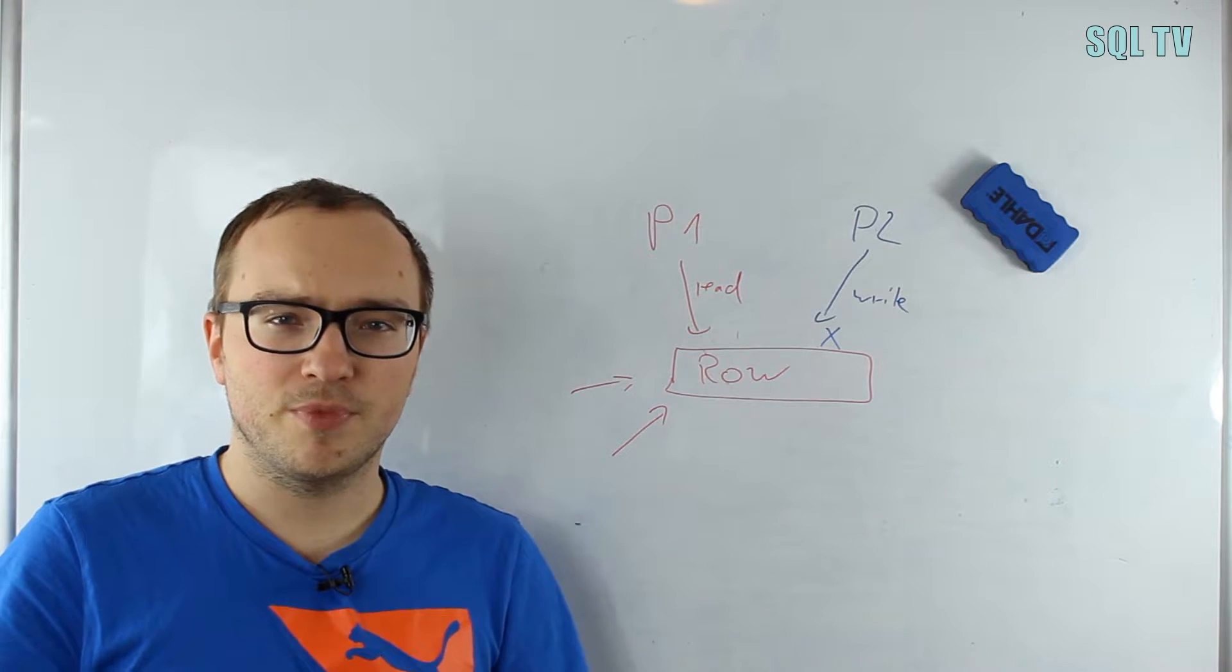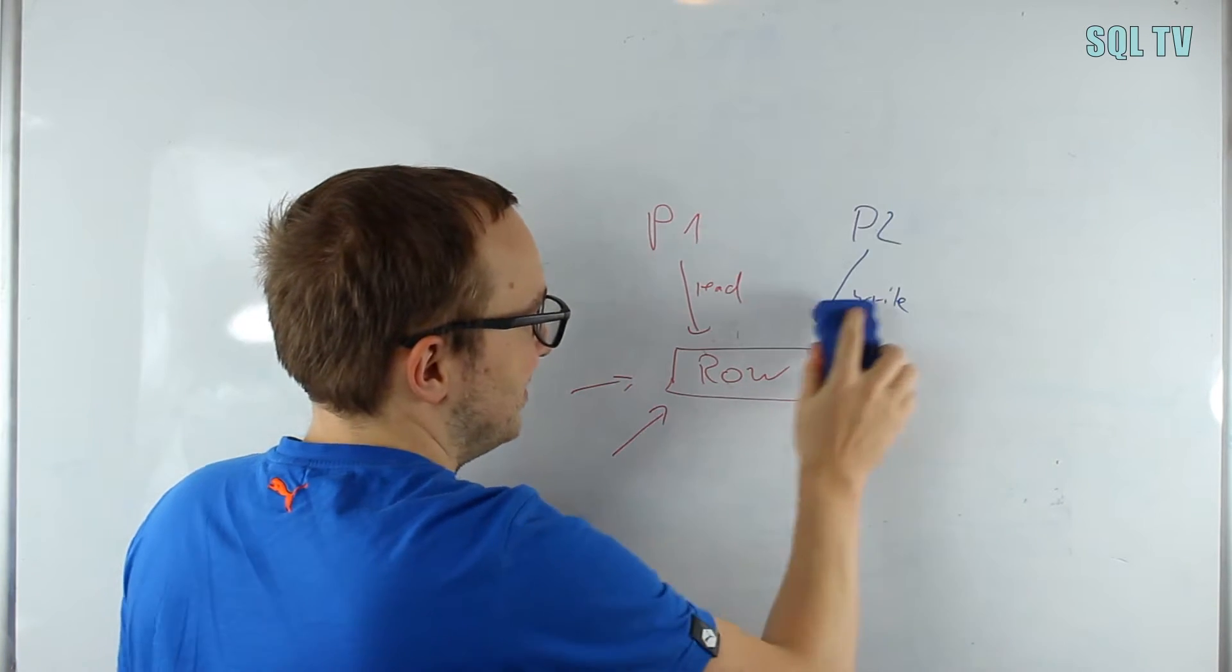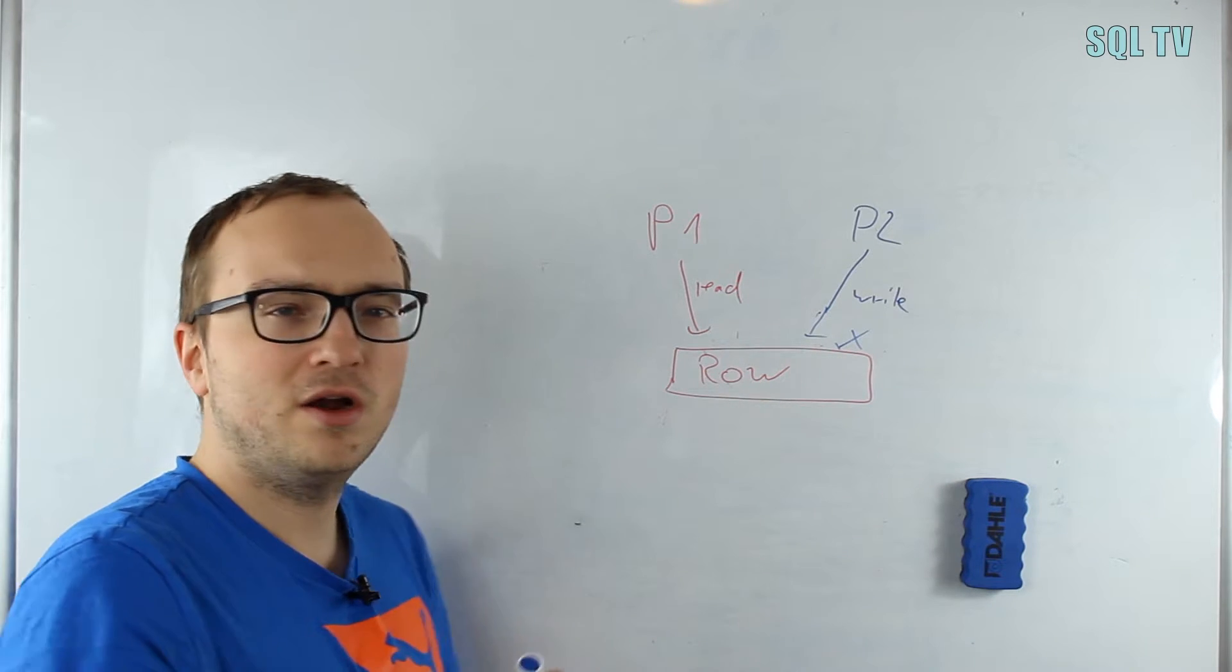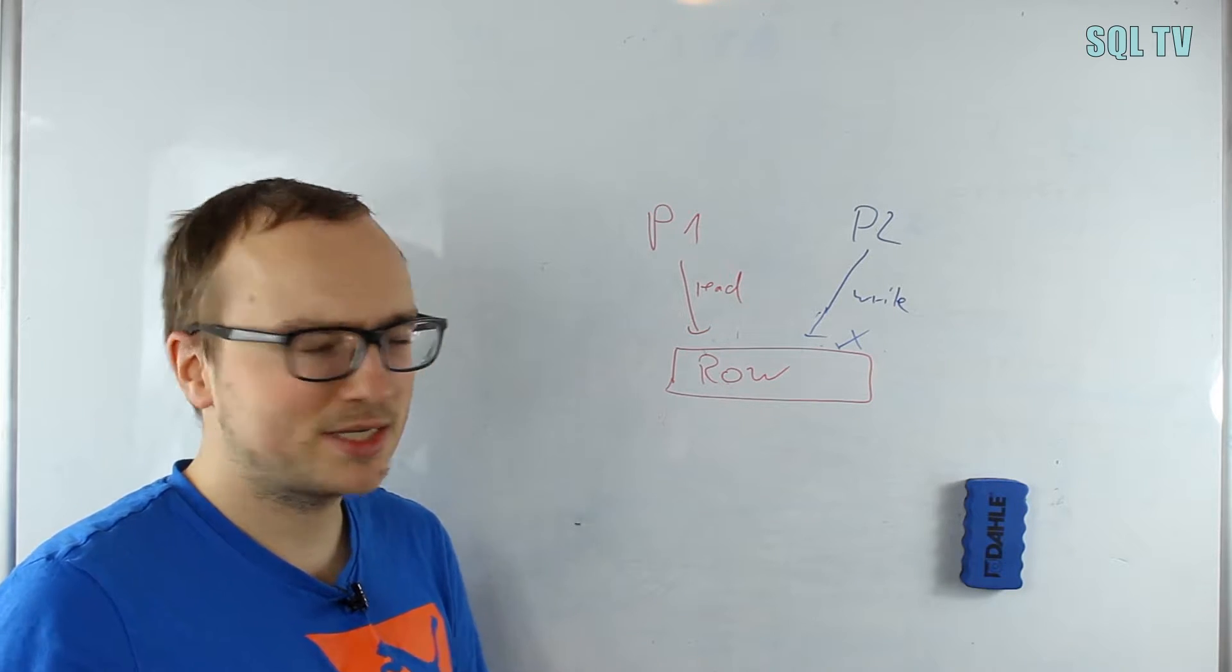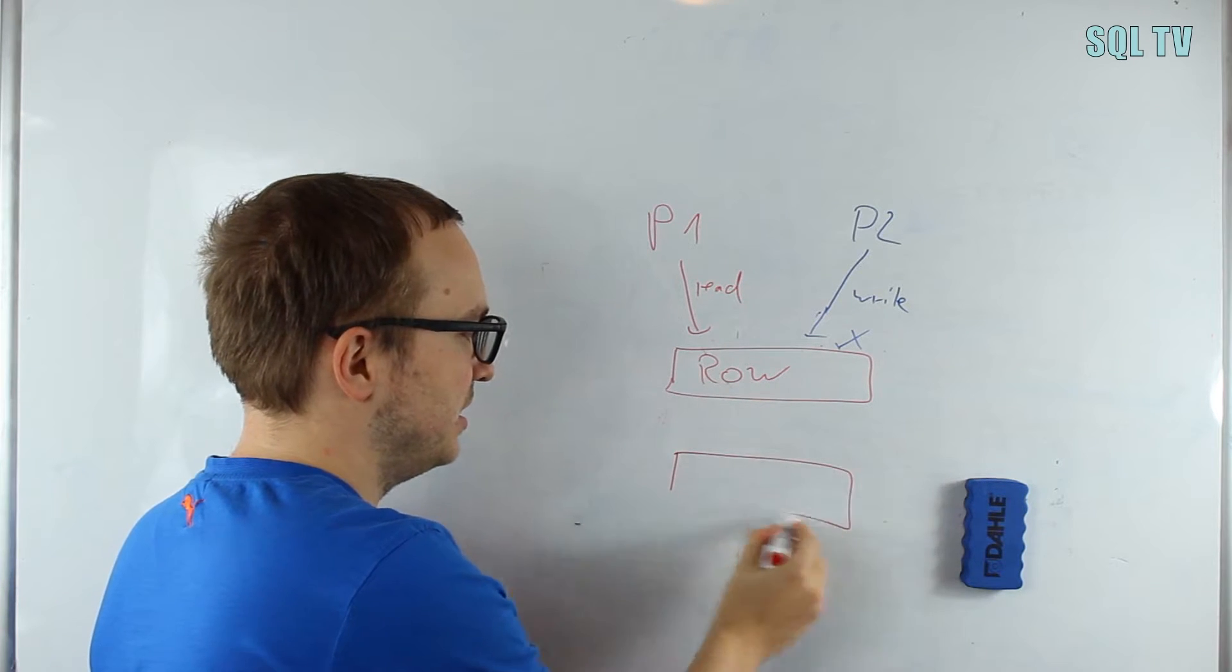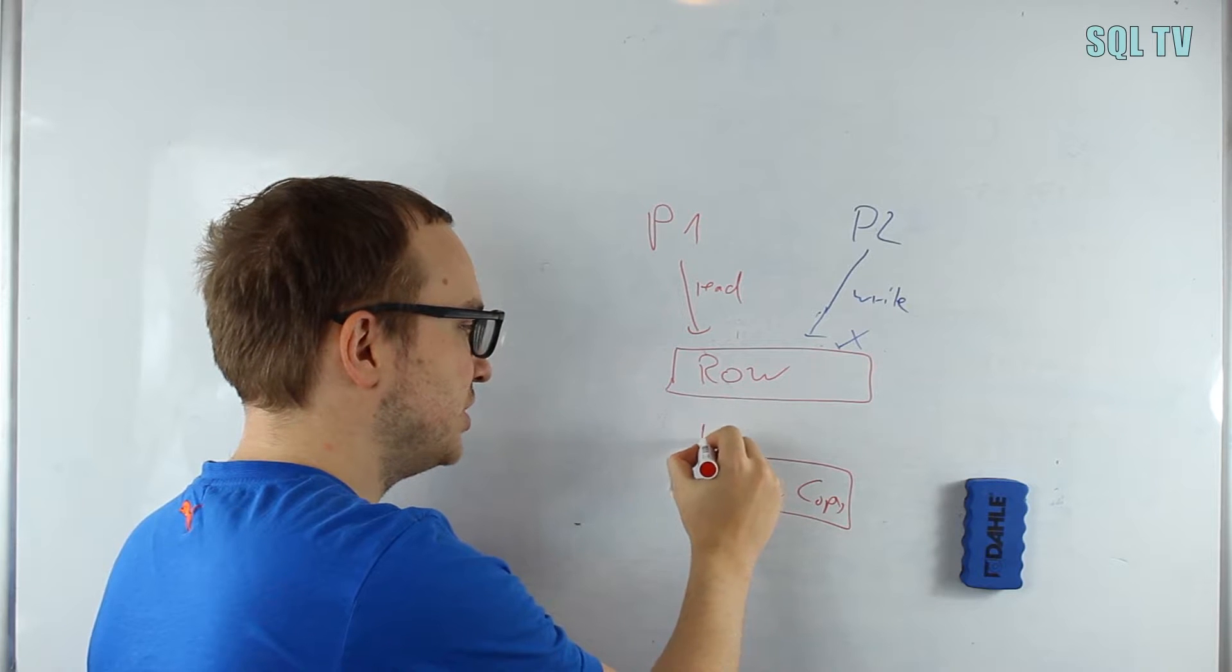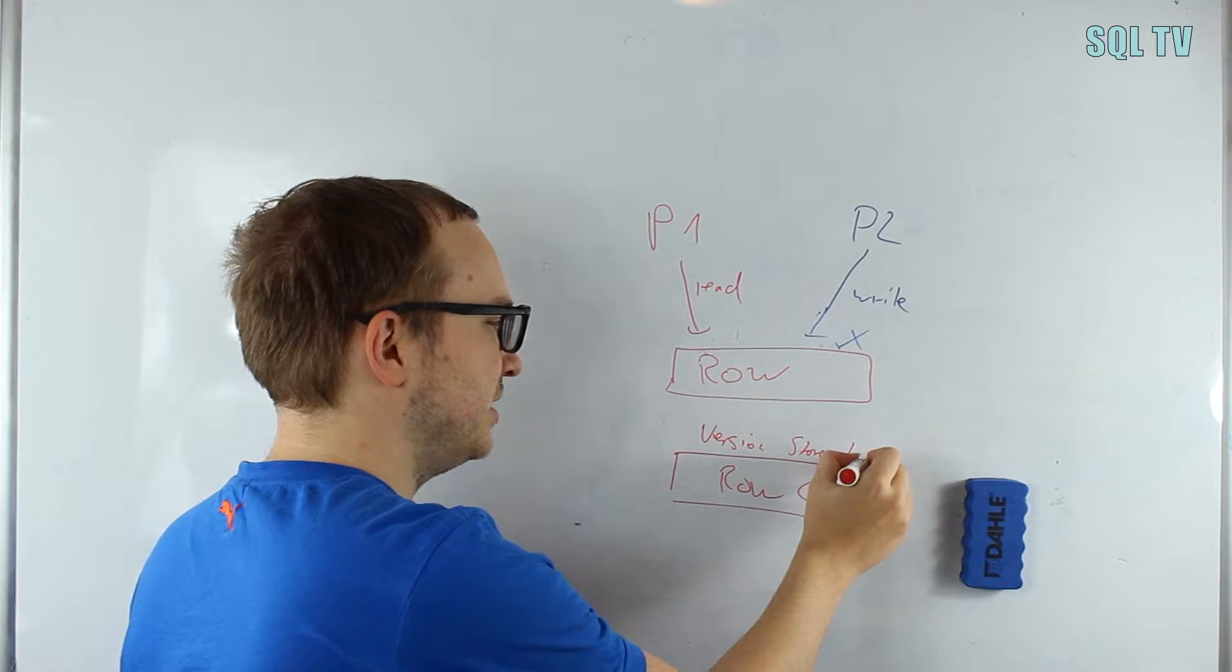The second approach is the optimistic model. The optimistic model works a little bit different. Assuming we have the same situation, and let's assume that the P2 writer comes first—it puts an exclusive lock right here. But now we don't want the reader to be blocked by this. What happens actually is that before the write of P2, a copy is created of that row. This copy is put into the version store. The version store is a place in tempdb, which means if you are using this kind of approach, then your tempdb also grows a little bit more.